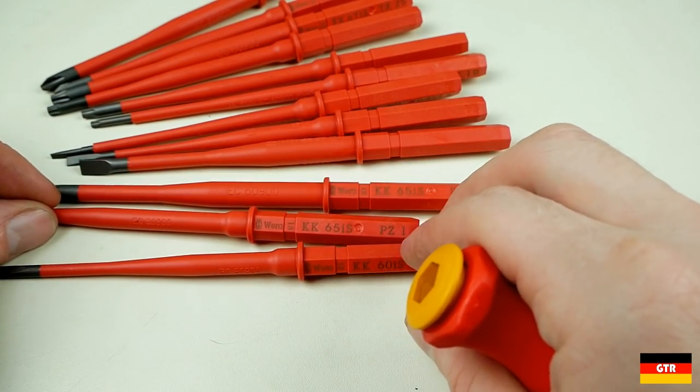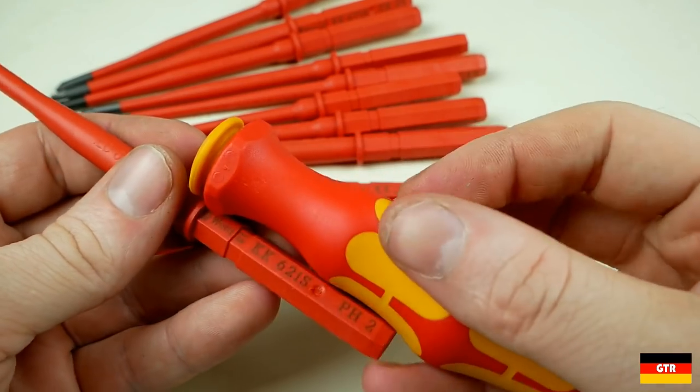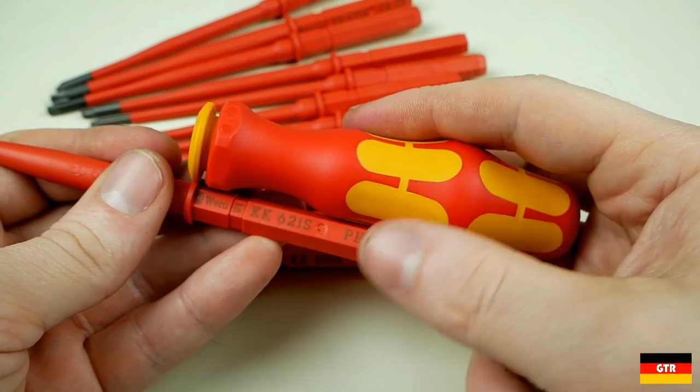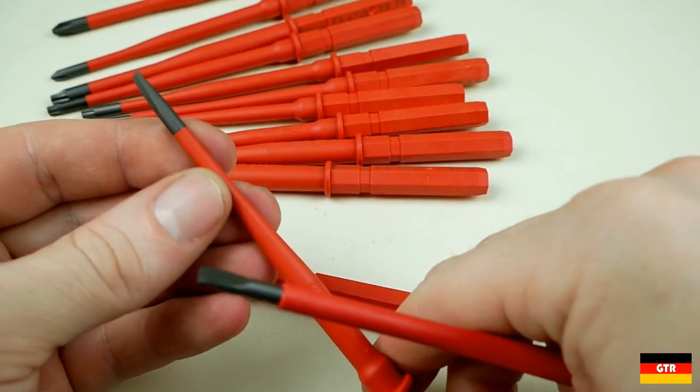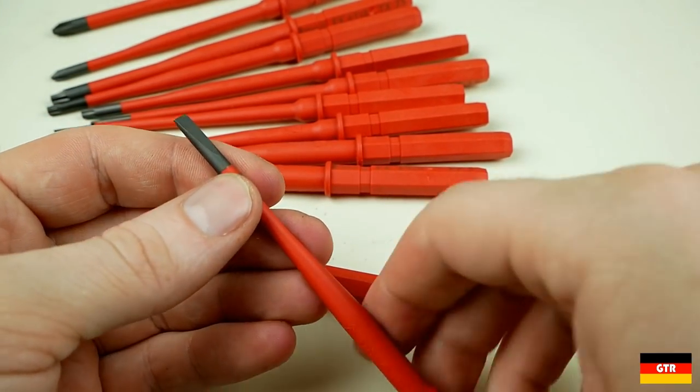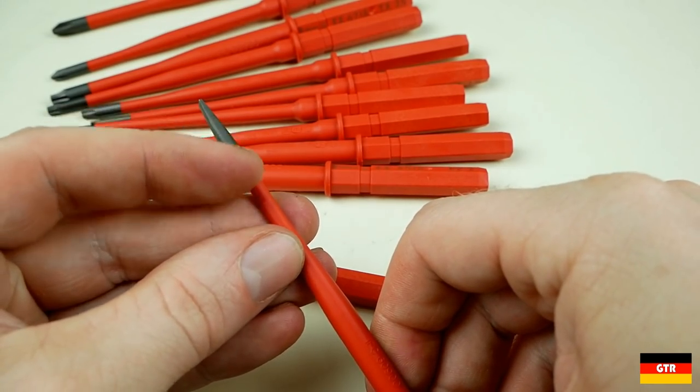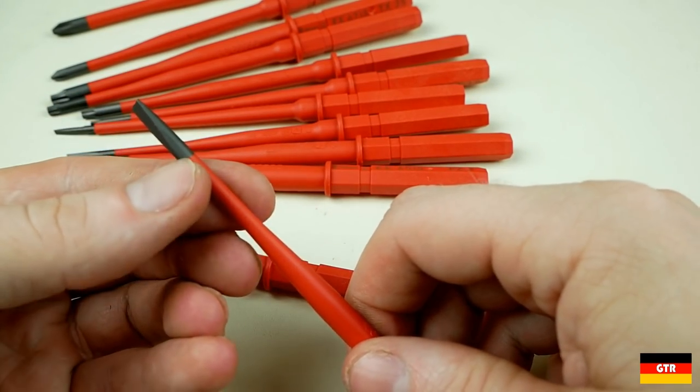There is a pretty good selection of tip styles here, with the Posi Drive, Phillips, slotted, and torques. You would probably still need a square or Robinson drive to complete your set if you were an electrician. One feature that most of these blades have is the insulated part is molded into a step in the shaft, to provide a nearly seamless transition between the tip and the insulated portion.